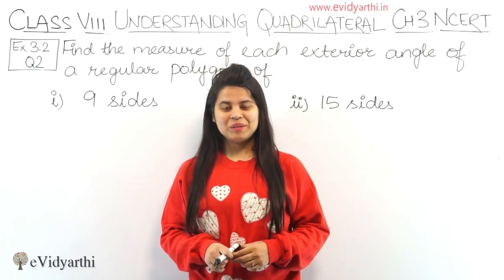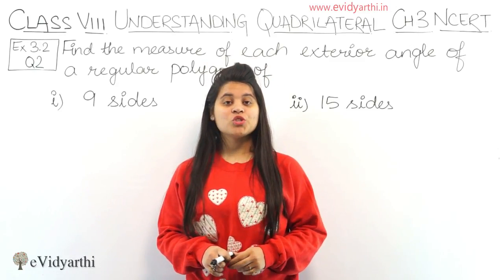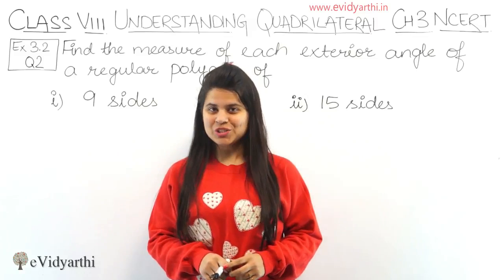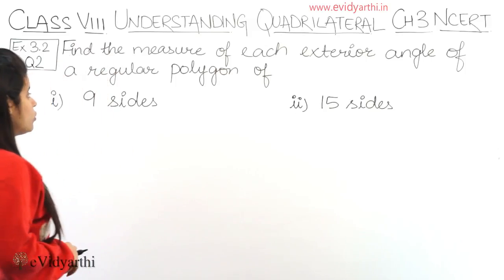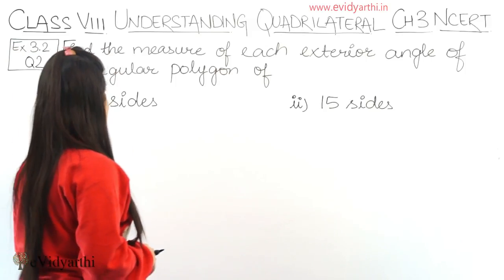Hello guys, this is Mansi from eVidyarthi. Now we are coming to question number 2, exercise 3.2. In this question we have to find the measure of each exterior angle of a regular polygon. First part: 9 sides.